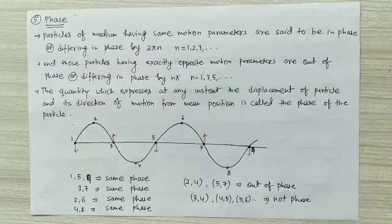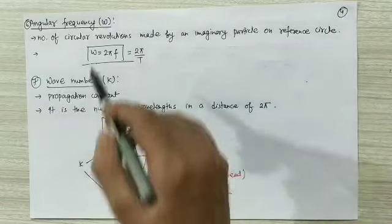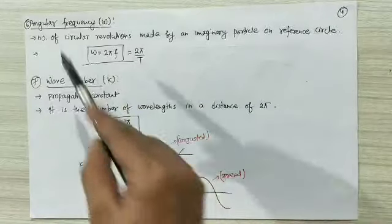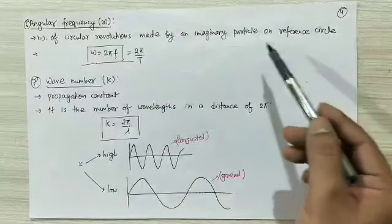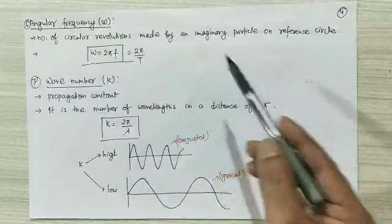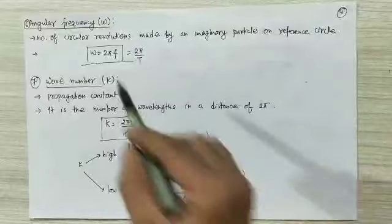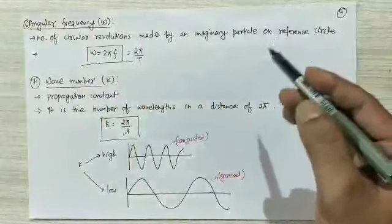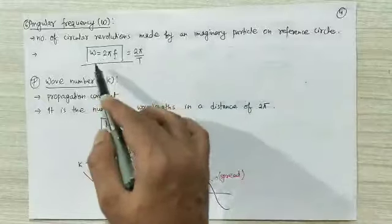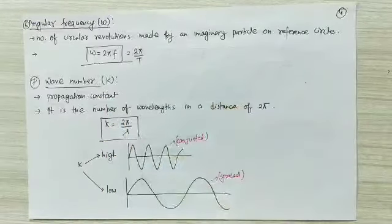The sixth wave parameter is angular frequency, symbol omega (ω). It is the number of circular revolutions made by an imaginary particle on a reference circle. Those who know SHM will understand this definition. Simply remember the formula: ω = 2πf, or ω = 2π/T.